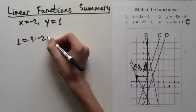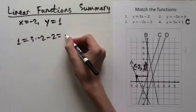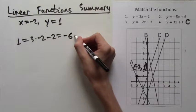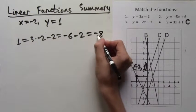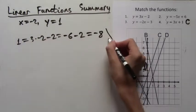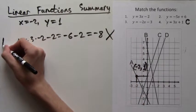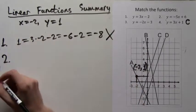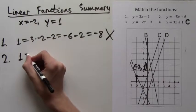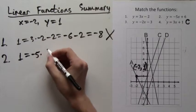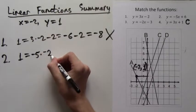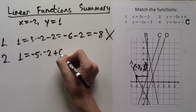So starting with formula 1, plug in y equals 1 equals 3 times x equals negative 2 minus 2, which results in 1 equals negative 8. This is obviously false. So we check formula 2. y equals 1, negative 5 times x is negative 2, and then plus 6.